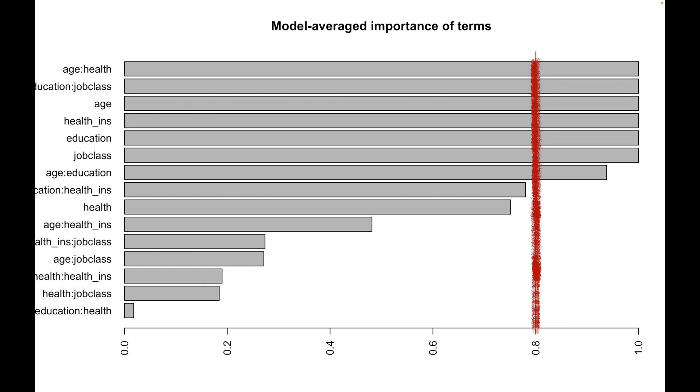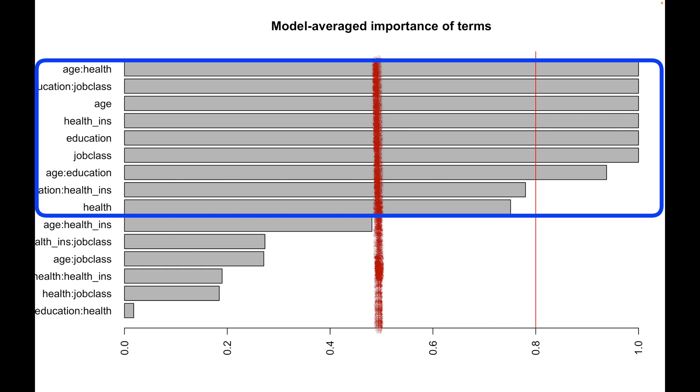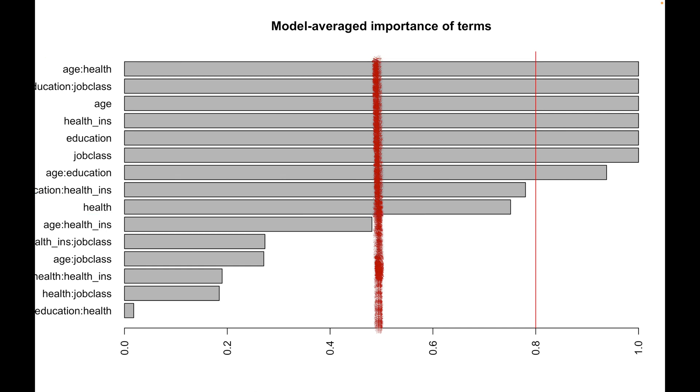This threshold is somewhat arbitrary though, so that we are free to set it at, let's say 50%, and include all the predictors and interactions with the importance above 50% into our final model.